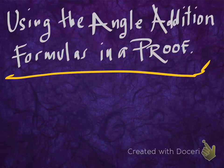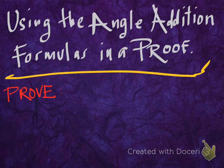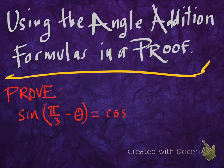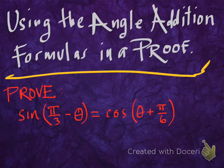Hello again. In this video, we're going to use the angle addition formulas in a proof. We're going to prove that sine of pi over 3 minus theta equals cosine of theta plus pi over 6.